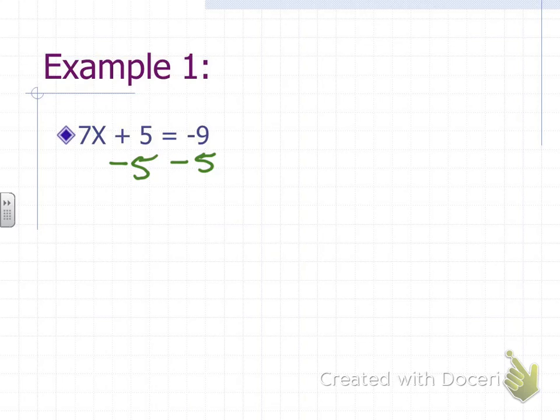So when I subtract 5 from the left and move it to the right, 5 minus 5 equals nothing, so they cancel out, and so I have 7x on the left. Now looking at the right side of the equation, I have negative 9 minus 5.